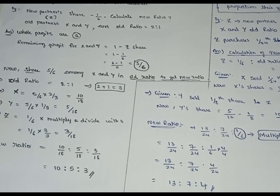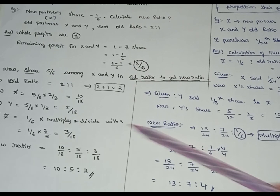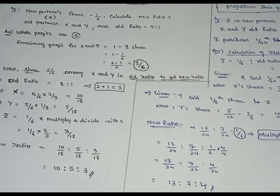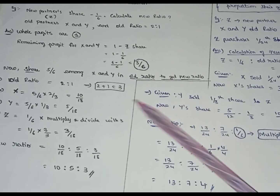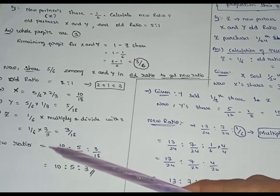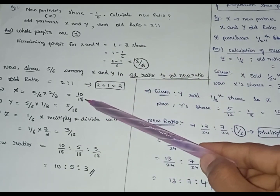Y's new share is 5 by 6 into 1 by 3, which equals 5 by 18. Z's share is 1 by 6. To get the same denominator as X and Y (which is 18), we multiply and divide Z's share by 3, giving 3 by 18. So 3 by 3 is 1, which is consistent.